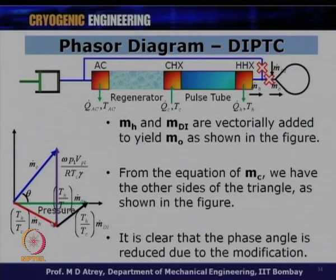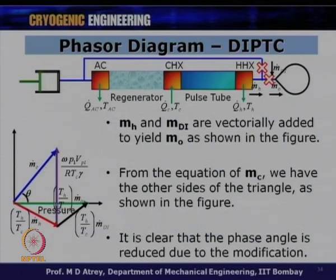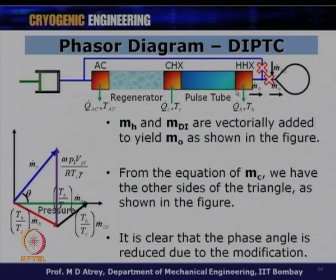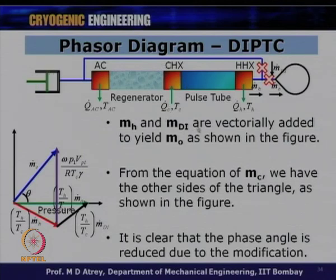The DIPTC phasor diagram clearly shows that the phase angle θ is reduced compared to OPTC due to this vector modification from the double inlet. This is the fundamental reason why double inlet pulse tube coolers are employed — the double inlet pulls ṁ_H below the pressure vector, reducing the angle between ṁ_C and the pressure pulse, and thereby increasing cooling effect. Please understand these three key aspects: why BPTC gives no cooling, why OPTC improves on it, and why DIPTC further reduces θ.